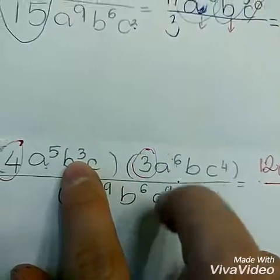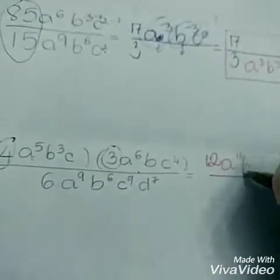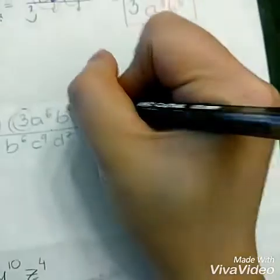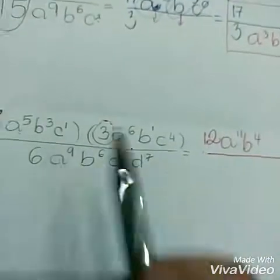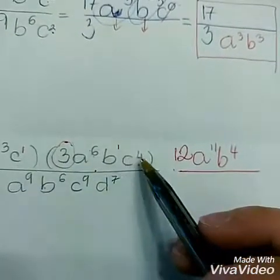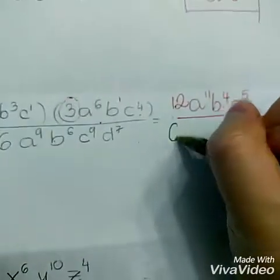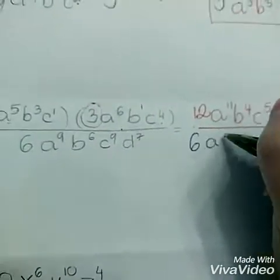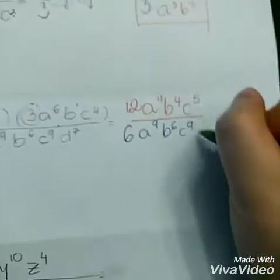B to the power of 3 times B is b to the power of 4 — I'm adding the exponents; the implied 1 makes it b to the power of 3 plus 1. Now C: I have nothing, so that's c to the power of 1, times c to the power of 4. I add the power: 4 plus 1 is 5. Now the bottom part — I'm going to copy exactly: b to the power of 6, c to the power of 9, d to the power of 7.